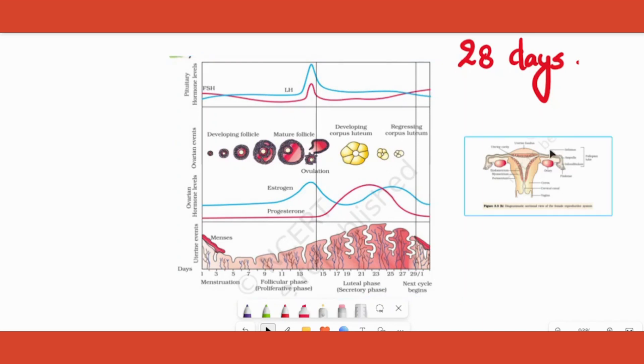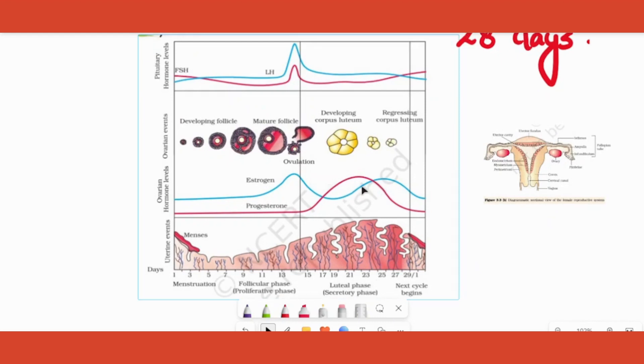Then it lowers in the luteal phase. Again it rises towards the end of luteal phase. Remember this: that is, it has two peaks. Coming to the other hormone, progesterone, when is it at the maximum? It is at the maximum when the ovum is waiting for the sperm.